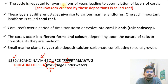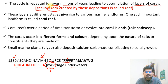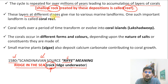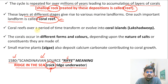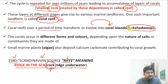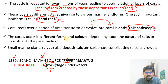The cycle of coral deposition is repeated over millions of years, leading to accumulation of layers of corals in the shallow water zone, creating a reef. These layers are at different stages, and the landform gradually develops into a reef structure. Coral reefs over a period of time transform and evolve into coral islands — the best example being Lakshadweep, which has evolved as a coral island.